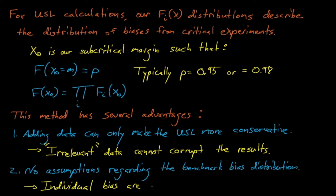Another advantage to extreme value theory is that it makes no assumptions about the bias data's distribution. The one assumption it does make is that each individual experiment's bias is normally distributed around some value, but unlike USL stats, it does not assume that the overall collection of the benchmark results is normally distributed.